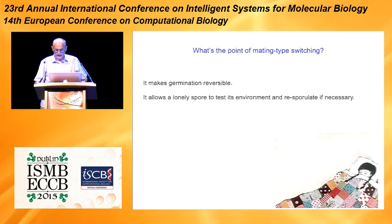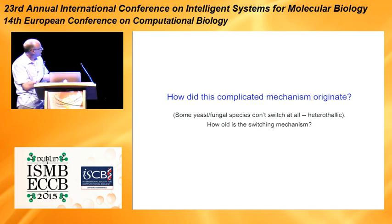It's a bit like a cold winter morning on a Saturday: you get up, look out of the window, it's snowing and raining and foggy, and you just go back to bed and say you'll try again later. That's the point of mating type switching.